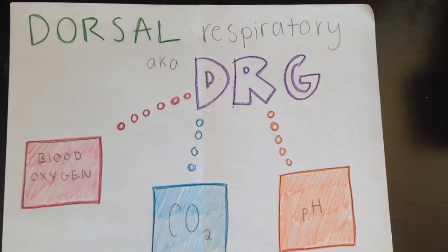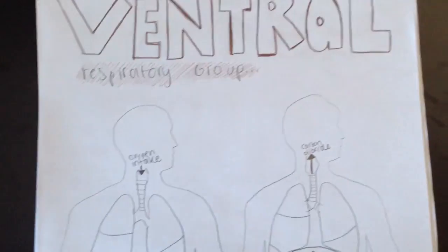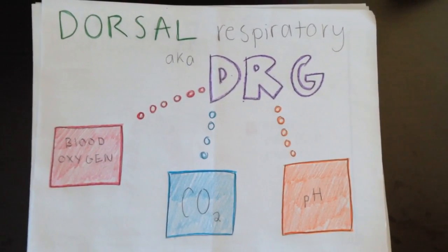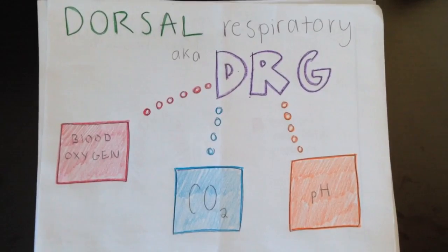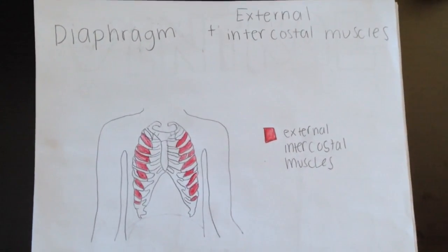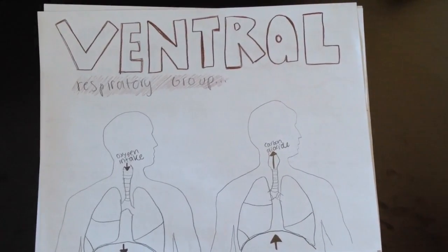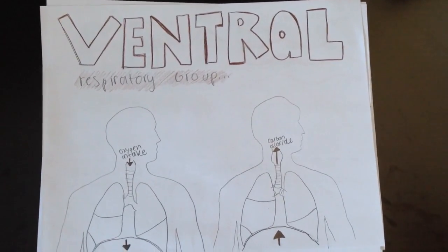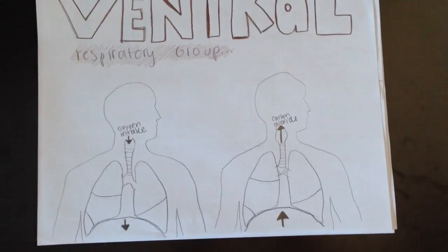The respiratory rhythmicity centers can be broken down into two groups: the dorsal respiratory group and the ventral respiratory group. The dorsal respiratory group, also known as the DRG, receives information about blood oxygen, pH, and carbon dioxide, and controls innervation of the diaphragm and external intercostal muscles. The ventral respiratory group only functions when activated by signals from the DRG during heavier breathing, requiring the accessory expiratory and accessory inspiratory muscles.